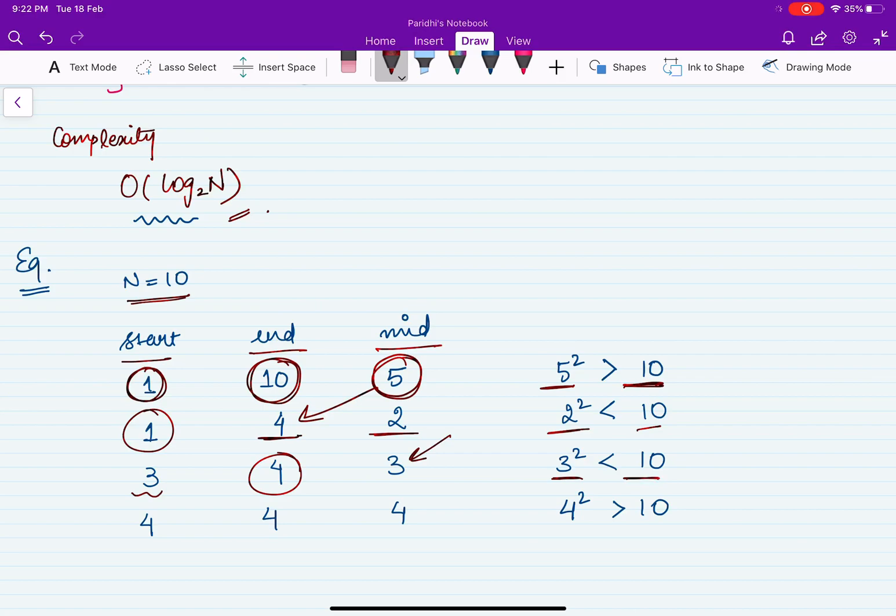Basically whenever we are getting it as less than the value, this particular number could be one possible answer. So first we have stored 2 because 2 square was less than 10. Then when we got 3 square less than 10, we will simply store 3 now, and we will move to our right. So we will get start equal to mid plus 1. This will remain same and we will get mid as 4. Now 4 square is greater than 10, so we will simply exit the while loop and we will return the stored answer which is 3.